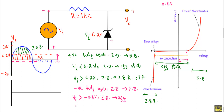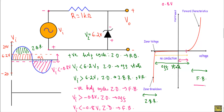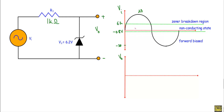The voltage between minus 0.8 to 6.2 volt will indicate the off state of the Zener diode. Now, if Vi becomes less than minus 0.8 volt, we will get sufficient voltage to keep the Zener diode in forward bias. In that case the Zener diode will be in forward bias — that means this portion of the applied voltage where Vi is less than minus 0.8 volt corresponds to that operating region.